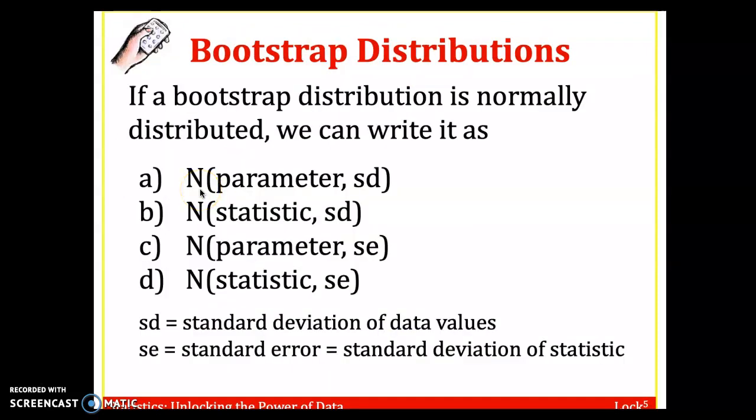All right, let's say if a bootstrap distribution is normally distributed, we can write it as what? Notice N stands for normal distribution. Is it the parameter and the standard deviation, the statistic and the standard deviation, the parameter and the standard error, or the statistic and the standard error?